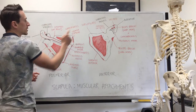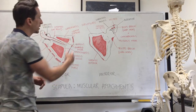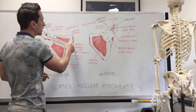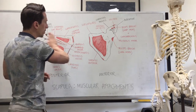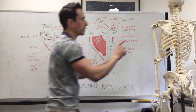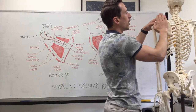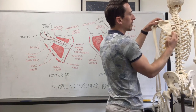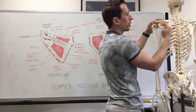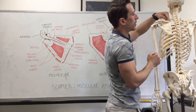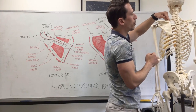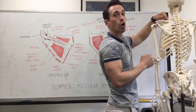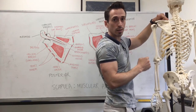Let's start with levator scapulae. The name 'levator' means to elevate the scapulae, and you can see it has an attachment point on the medial border of the scapula. I've got Frank here with the left scapula — this is the medial border, and obviously this is going to be the lateral border. The superior medial border is where we have the insertion site for levator scapulae.